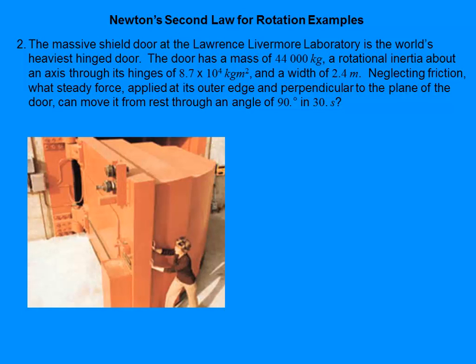Second example — this is a problem from your book. This is an actual door at Lawrence Livermore Laboratory; at one point it was the world's heaviest hinged door. This was some kind of door for radioactive work inside, so they needed this big, heavy door to protect people on the outside.